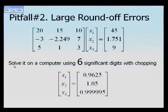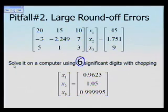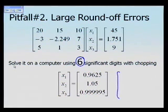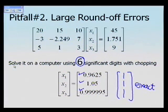Let's conduct forward elimination using the Naive Gaussian method on a six-significant-digit computer with chopping, meaning all intermediate and final calculations use six significant digits and the seventh significant digit is not used to round off numbers. The solution we get is very close to the exact solution of 1, 1, 1, so with six significant digits of chopping we don't need to be worried.